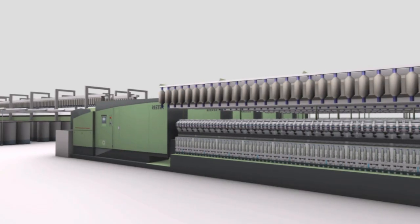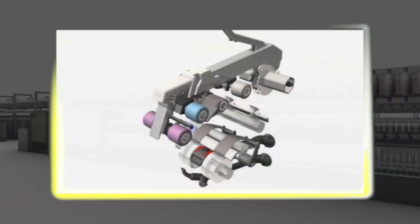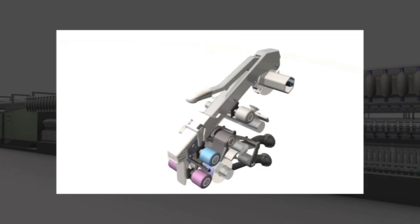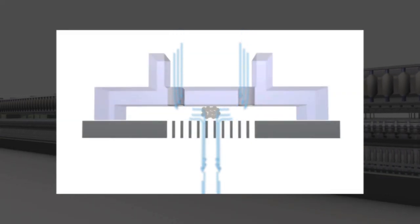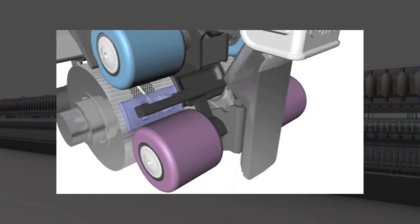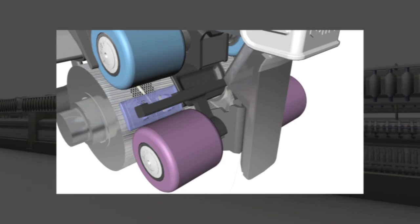Compact spinning is a further development of classical ring spinning. The yarn is bundled by directed air flows and compacted into yarn with reduced hairiness and increased strength. By means of a vacuum, the fibers are joined perfectly on a perforated drum.